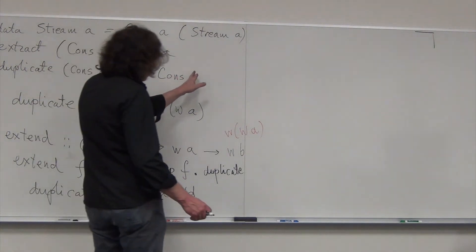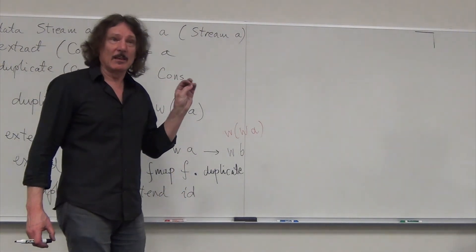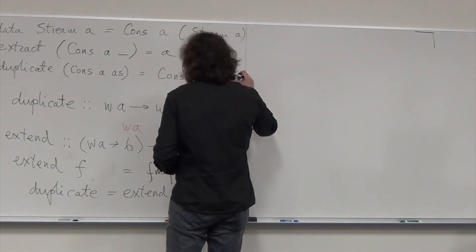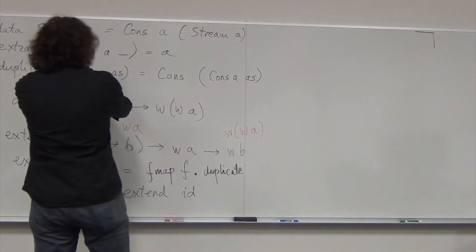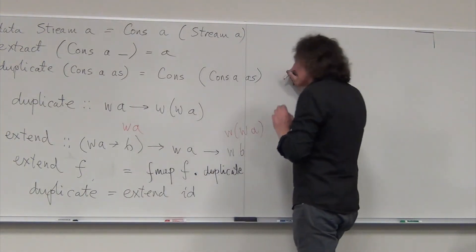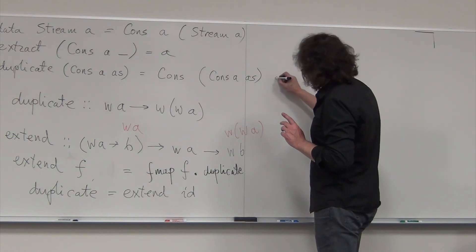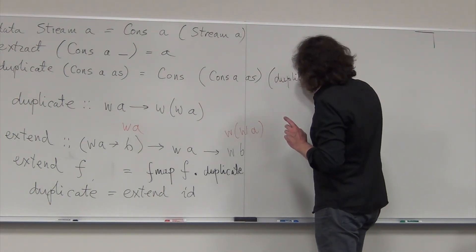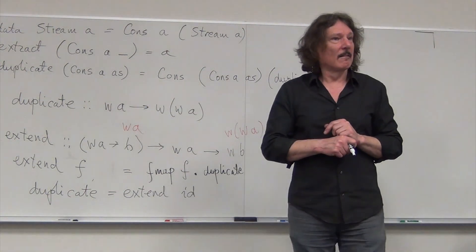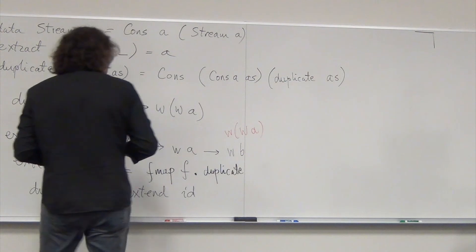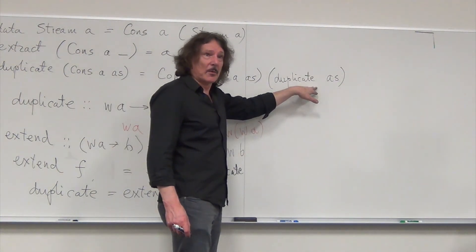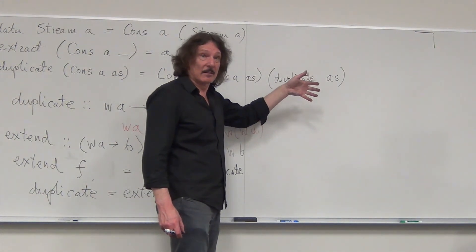We've duplicated the whole stream in the first position. But the rest of the stream is obtained by duplicating a's. Recursively, the result is that the head is the previous stream, but the second element in the stream will be that stream truncated by one — the tail of the stream — and so on.